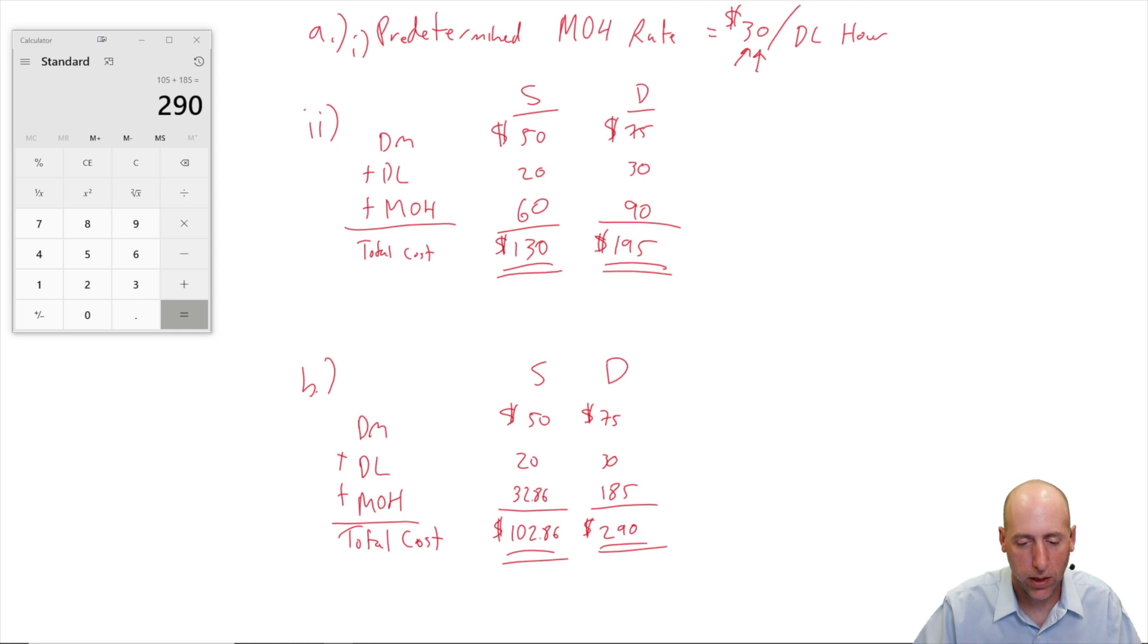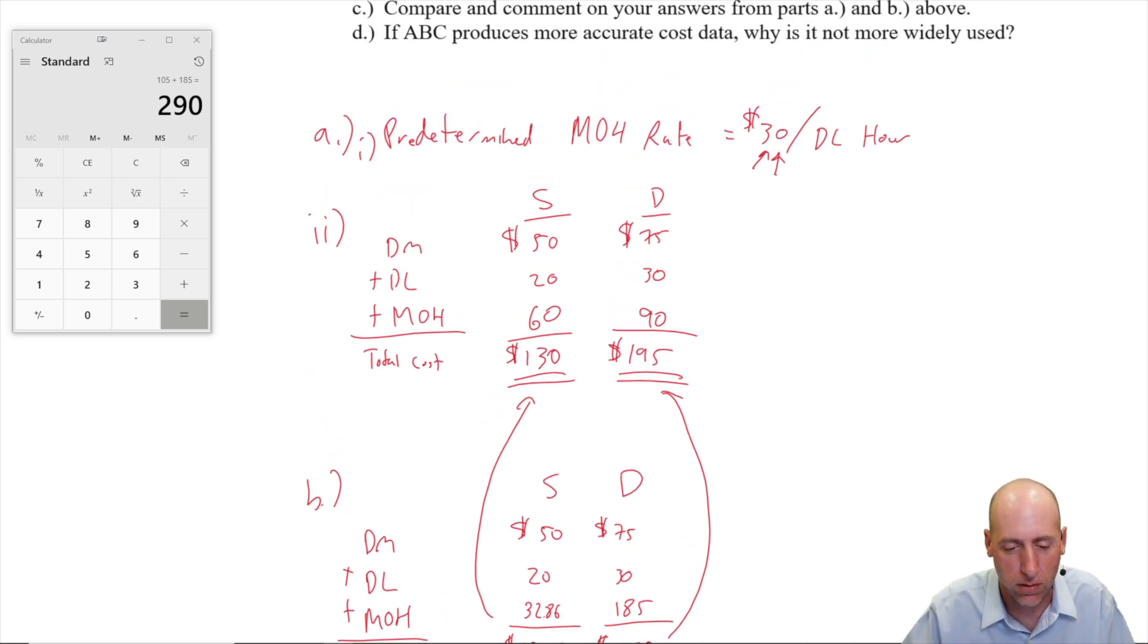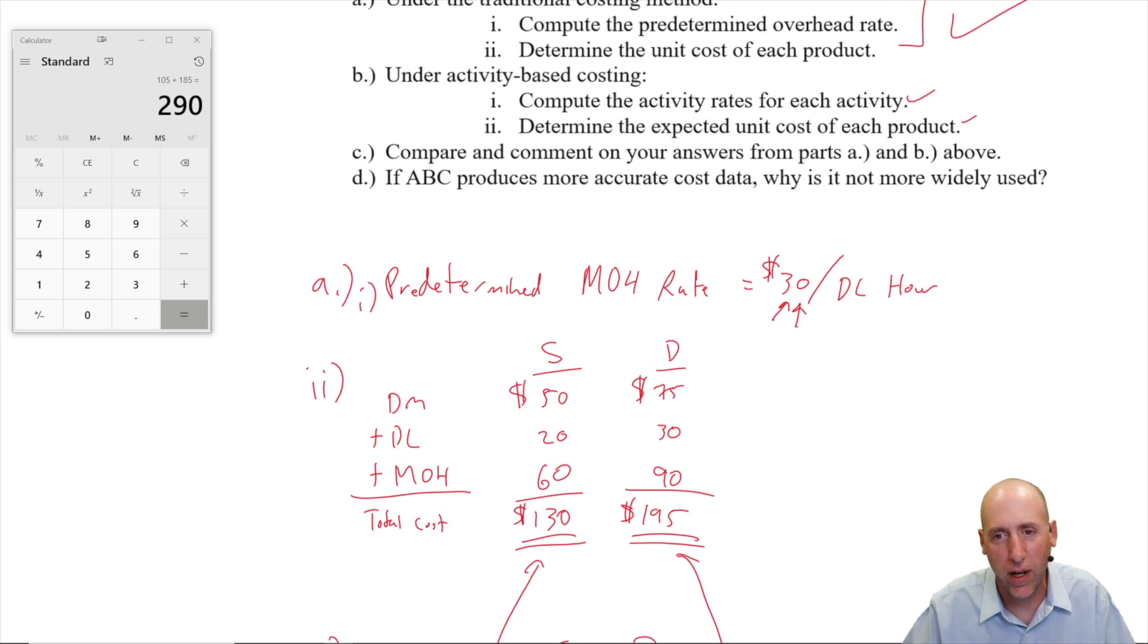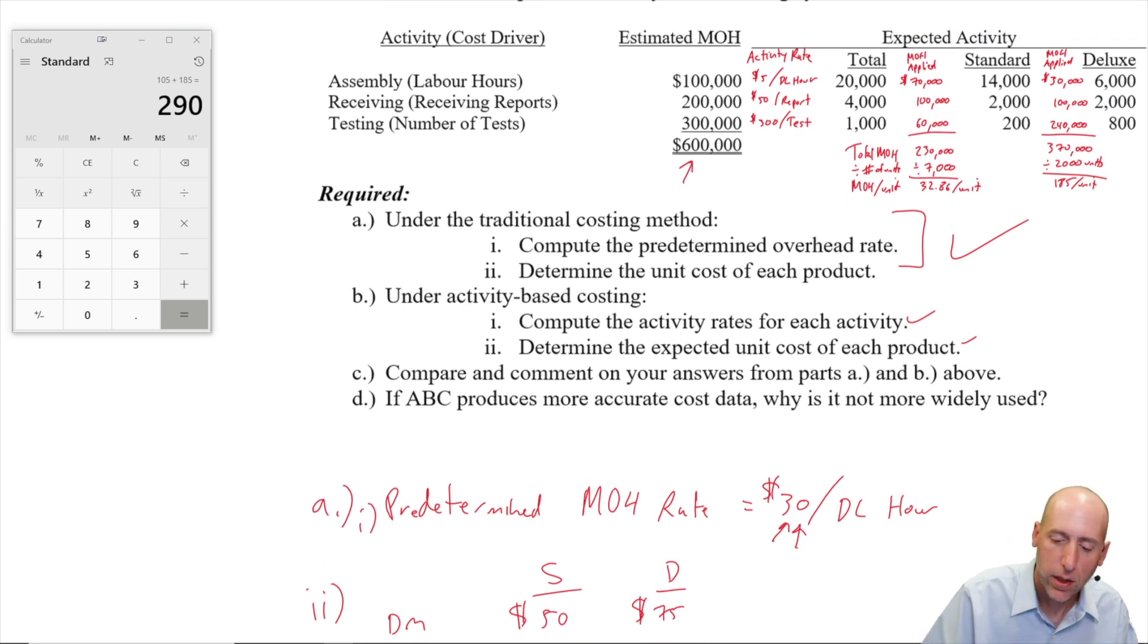Just eyeballing this, you can see this is the same company, same situation, just slightly changed costing system. And basically what we're learning here is that under the previous system, the standard was over-costed and likely overpriced. The deluxe was way under-costed and likely underpriced. And does that explain how we might be losing profitability? I think it does, right? If you don't understand your costs very well, you could be mispricing things and you could be making terrible mistakes.